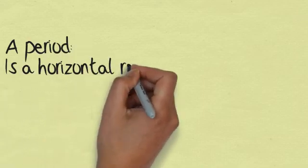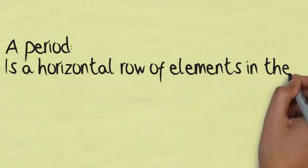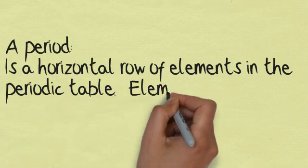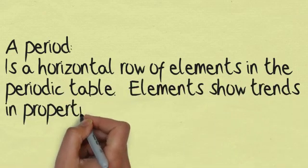A period is a horizontal row of elements in the periodic table. Elements show trends in properties across a period.